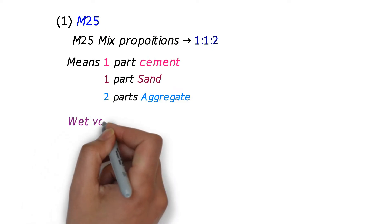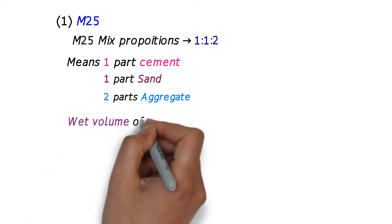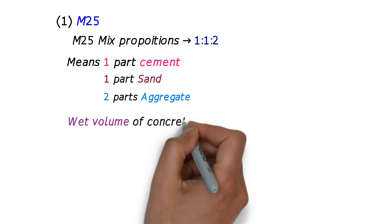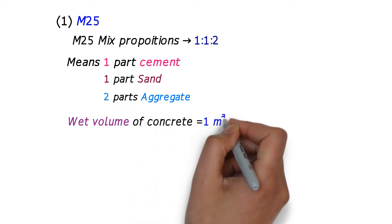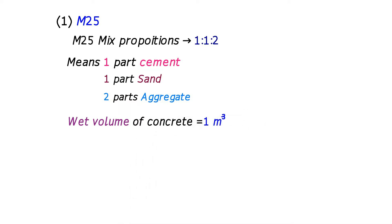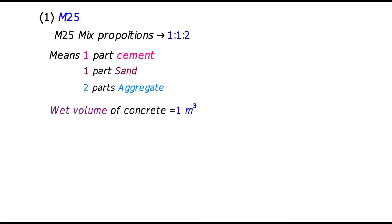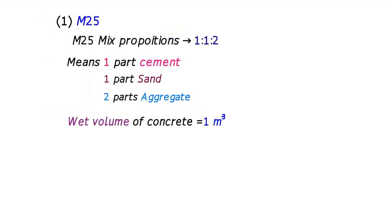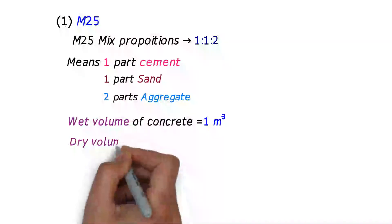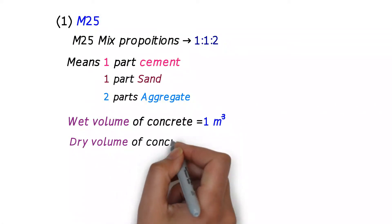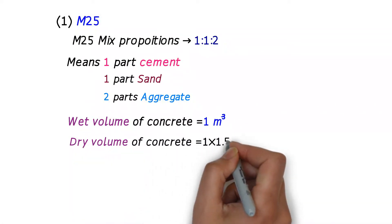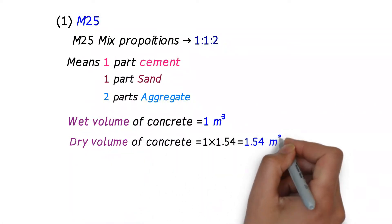We are calculating the quantities for 1 meter cube. The wet volume of concrete is 1 meter cube. By multiplying the wet volume of concrete with the factor 1.54, we get the dry volume of concrete. The dry volume of concrete is equal to 1 × 1.54 = 1.54 meter cube.